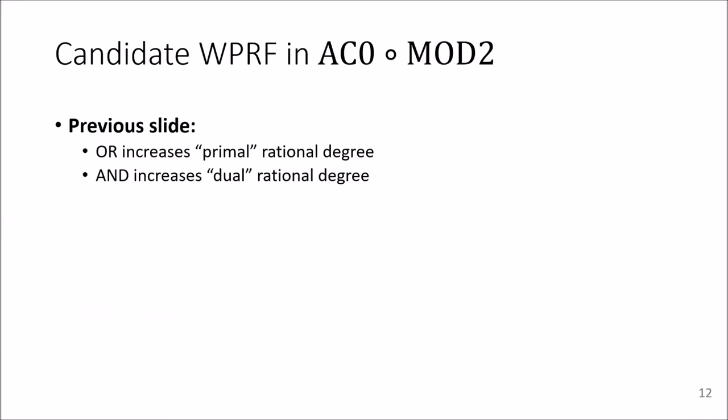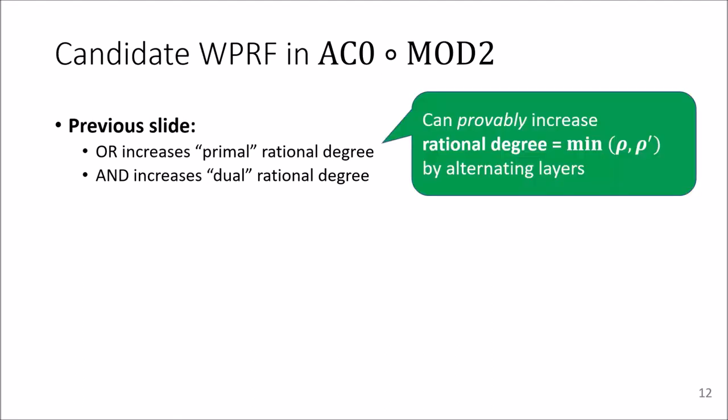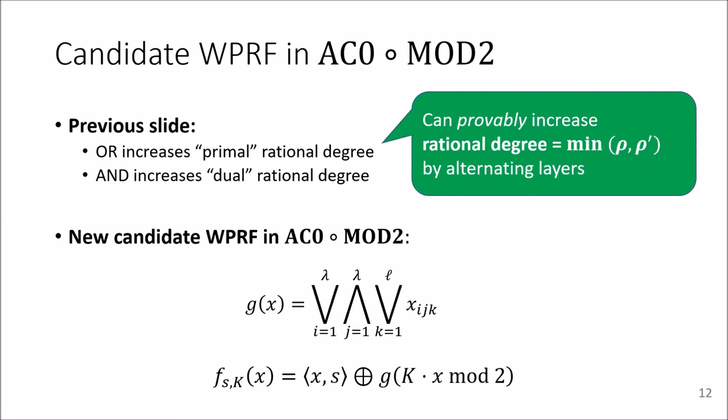So by the previous slide, we know that the OR increases the primal rational degree and the AND increases the dual rational degree. So we can provably increase the rational degree, which is the minimum of the primal and the dual rational degree, just by adding sufficiently many alternating layers.